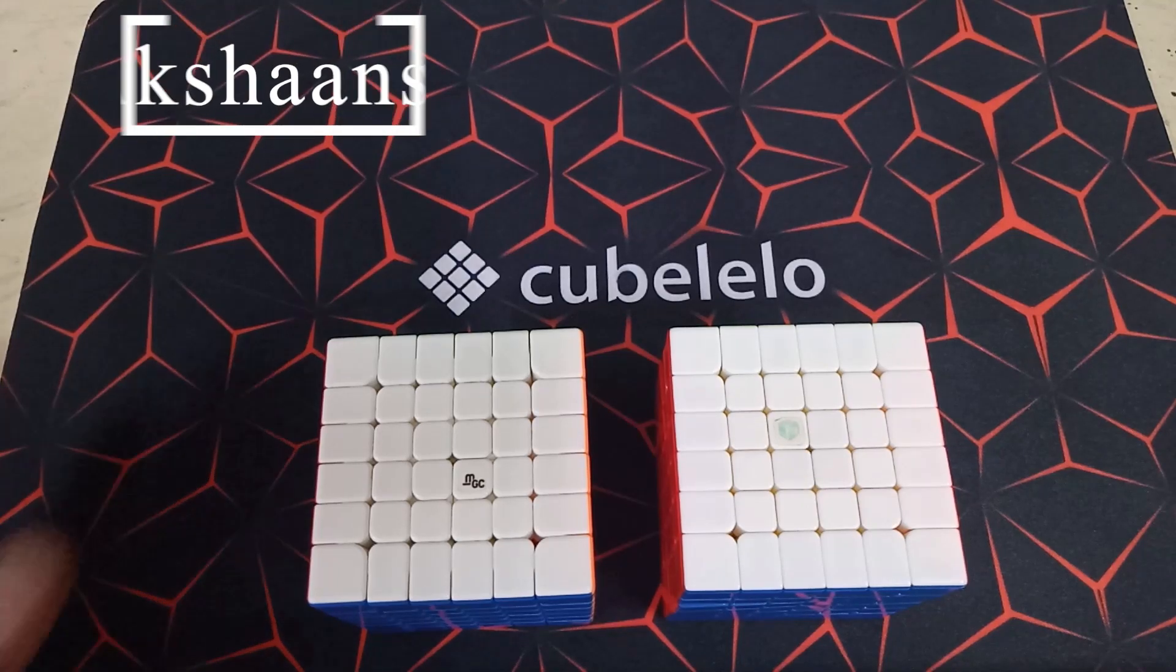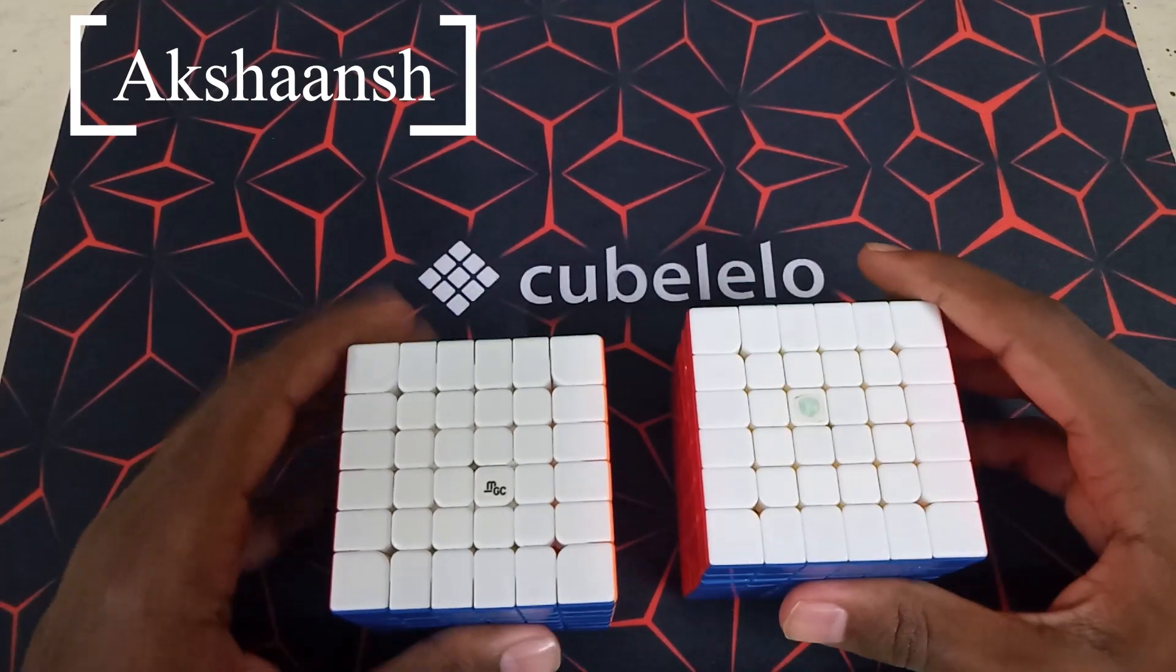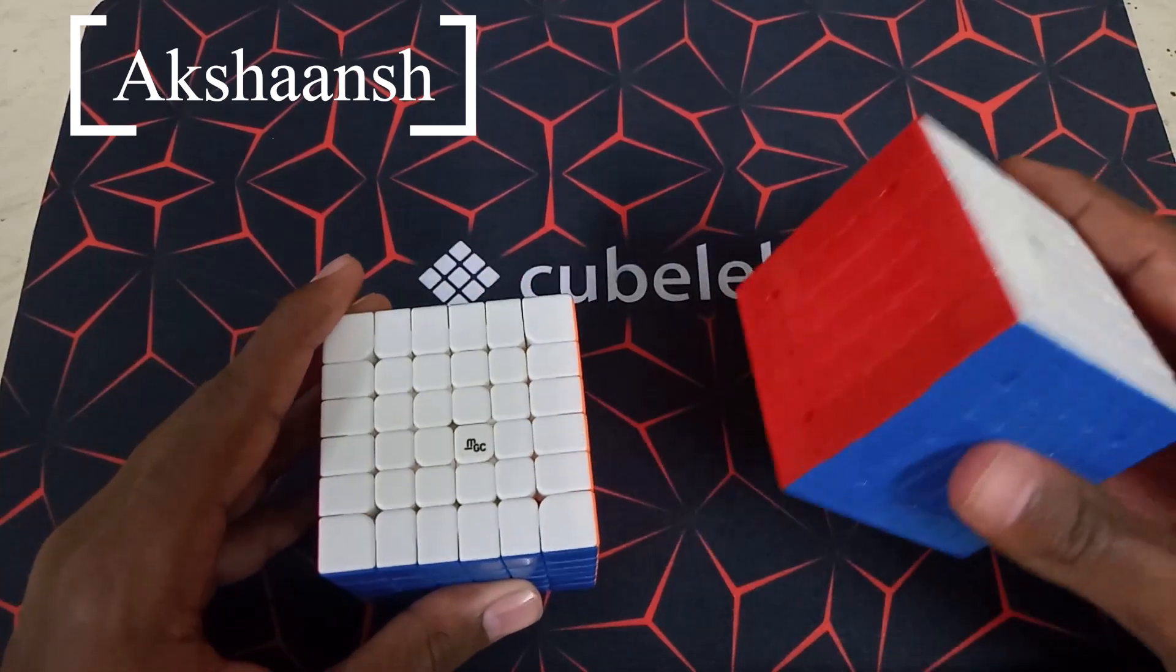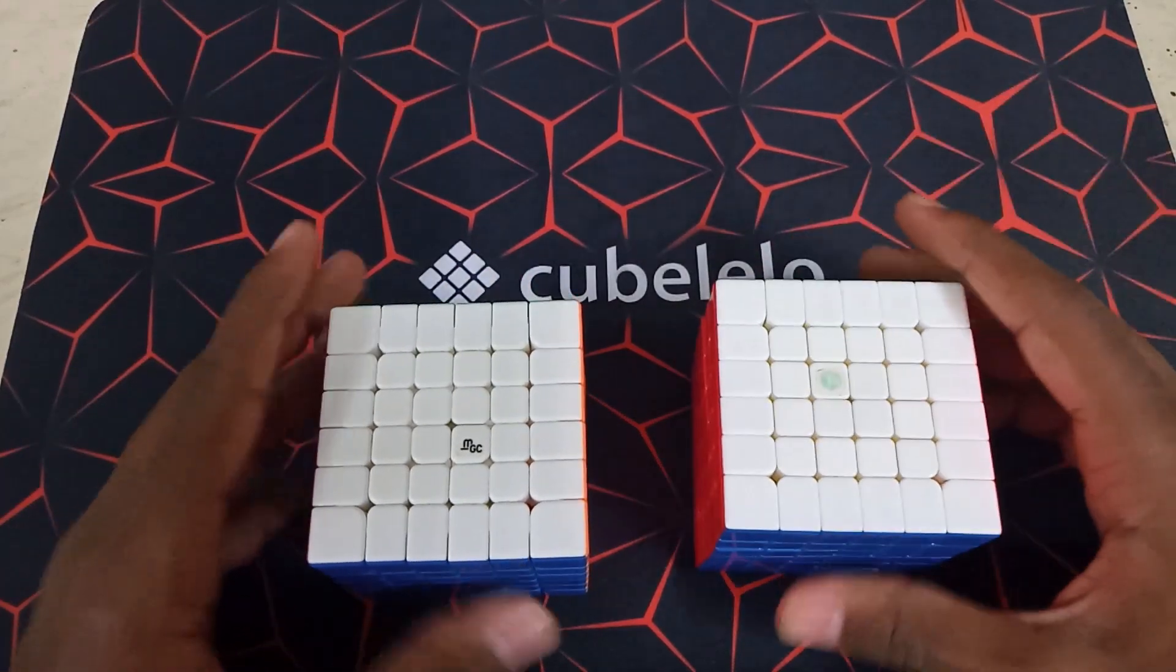Hey everyone, Akshanj here, and in today's video we're going to be comparing the YJ-MGC 6x6, which is the magnetic one, and the X-Man Shadow M V1. So let's get right into this.